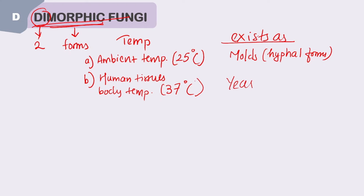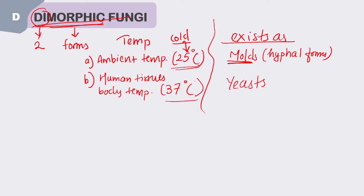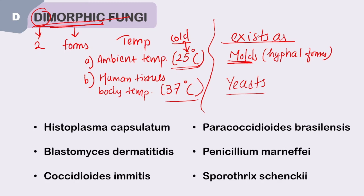At human body temperature — 37 degrees Celsius — within human tissues, dimorphic fungi exist as yeasts. A simple way to remember: 25°C is colder, so 'cold = mold.' At 37°C they exist as the yeast form. That's the mnemonic: cold is mold, and at 37 they exist as yeast.